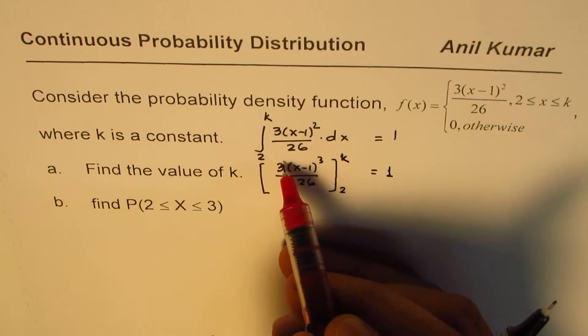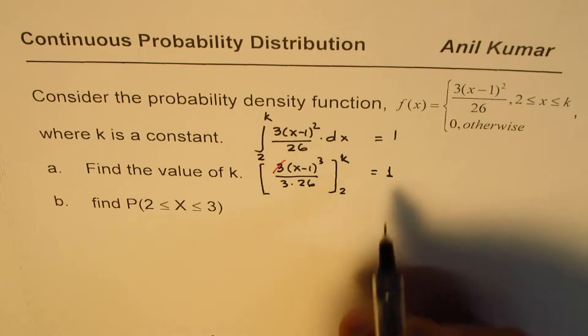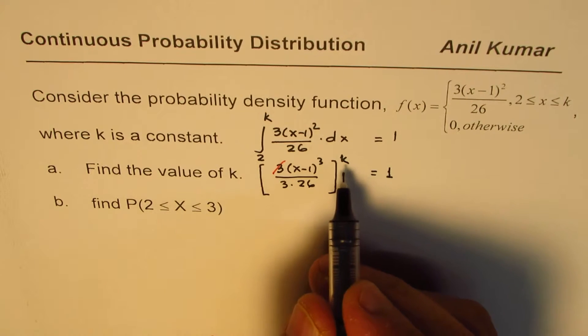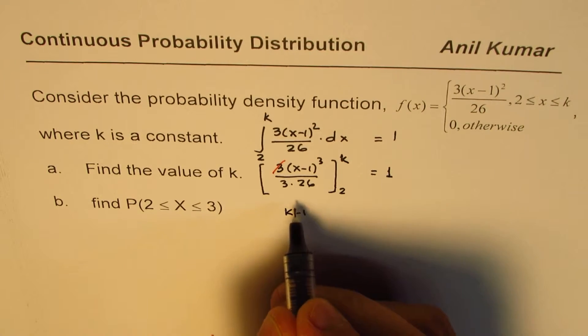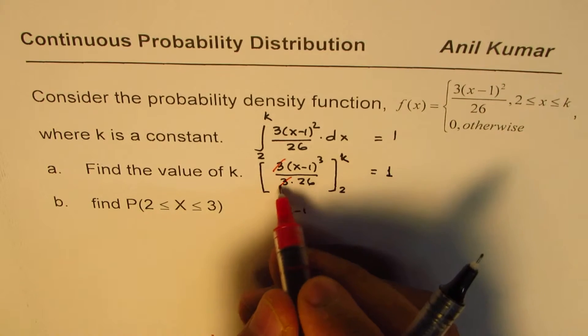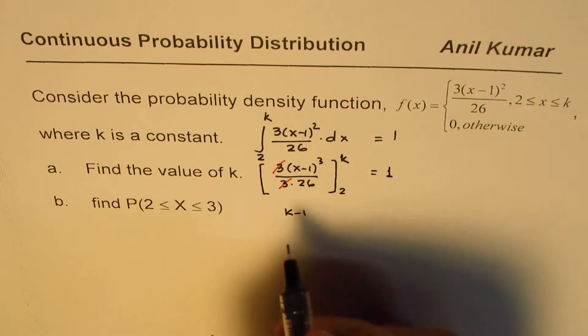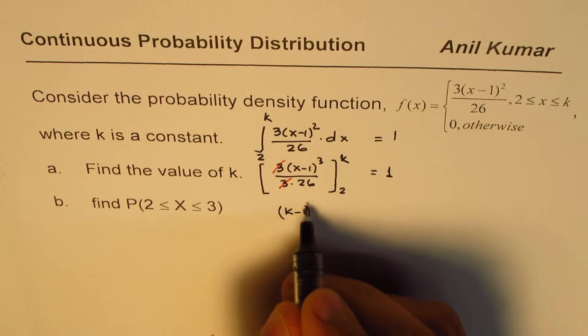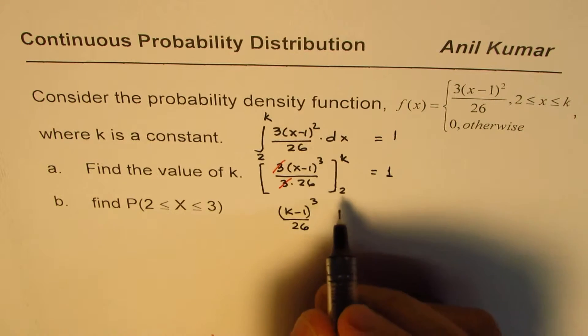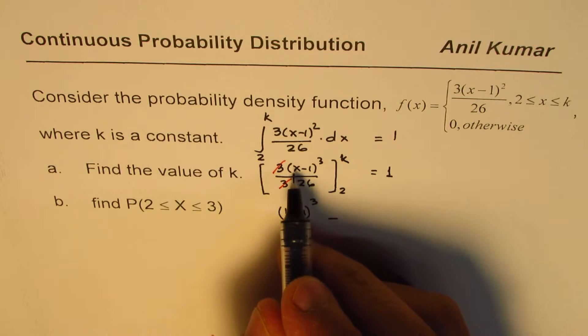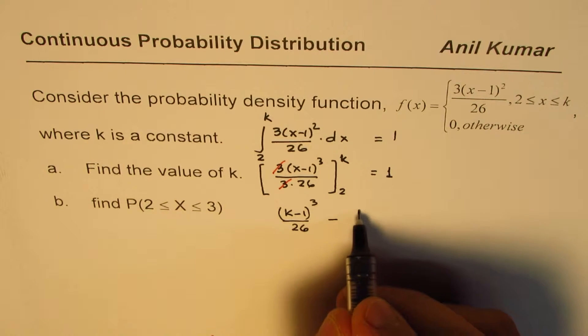So we can now substitute the values and then find what k is. If I substitute k here, I get (k-1)³ over 26 minus, when I substitute 2 here, 2 minus 1 is 1, so we get 1 over 26 equals to 1.